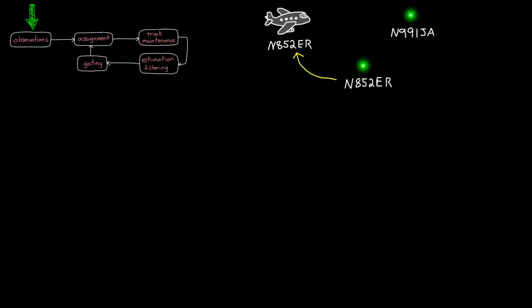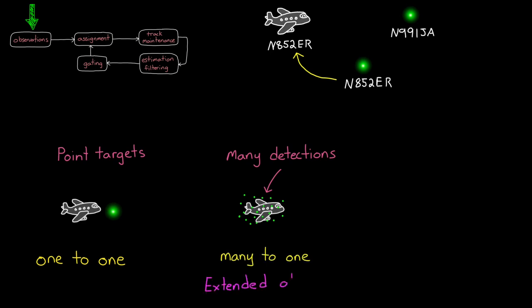Other things to consider with observations is that if the tracked object is a point target, then the observation would contain at most one detection. So we have to associate one detection with one object. But if the target object is large and the sensor has sufficient resolution, like with LiDAR for instance, there may be more than one detection per target, and we need to consider this when determining how we're going to handle associating this data.